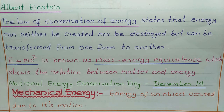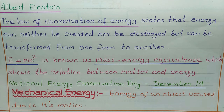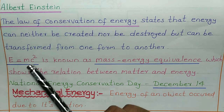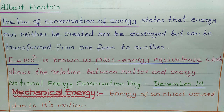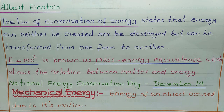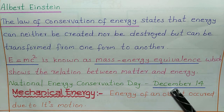E equals mc squared is known as mass-energy equivalence, which shows the relation between matter and energy. Here, E is energy, m is mass, and c is the velocity of light. National Energy Conservation Day is celebrated on December 14.